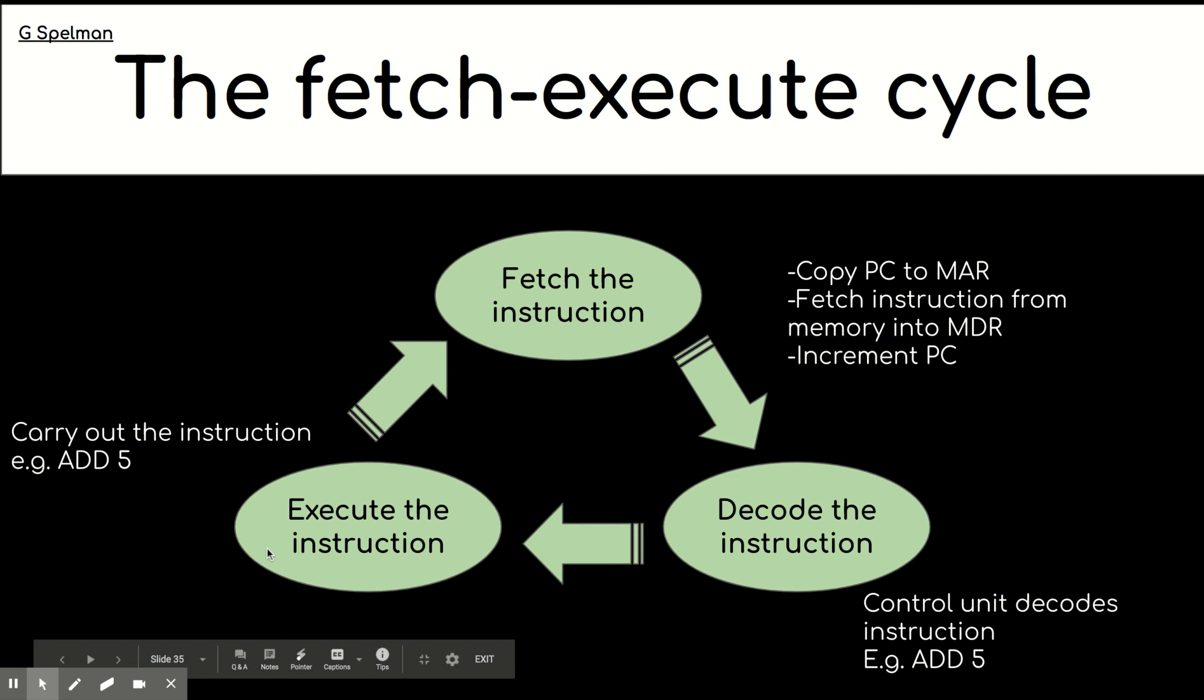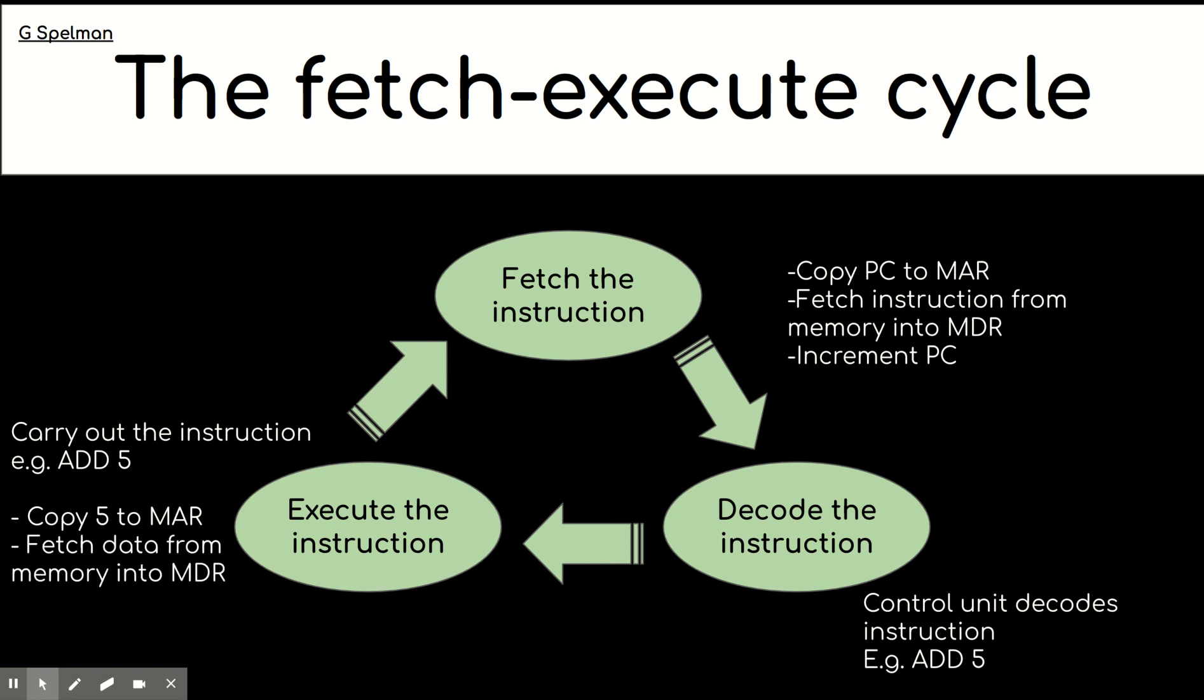And then finally, this instruction is carried out. So again, we'll use the same example. So five is copied to the memory address register, because remember the CPU will now need to go and fetch whatever is in location five. The data that's fetched is going to be put into the memory data register.